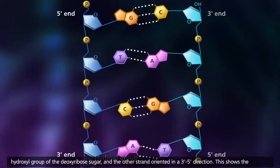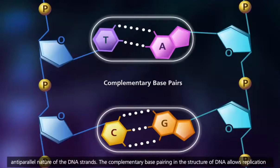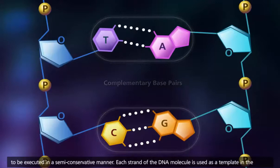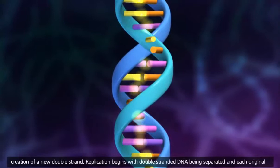The complementary base pairing in the structure of DNA allows replication to be executed in a semi-conservative manner. Each strand of the DNA molecule is used as a template in the creation of a new double strand. Replication begins with double-stranded DNA being separated, and each original strand, called a parent strand, is used as a template for the complementary base pairing of nucleotides to make two new molecules.